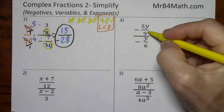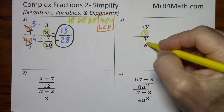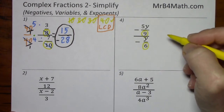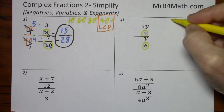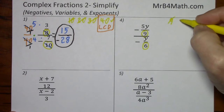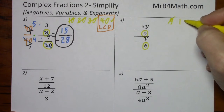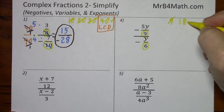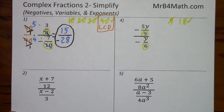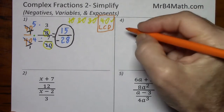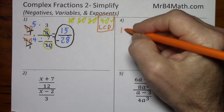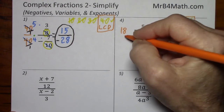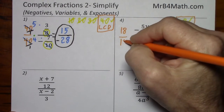Looking over here, the denominators are 9 and 6. So we look at multiples of 9 — that doesn't work. 18 does work, so that's our least common denominator. We're going to multiply by 18 over 18.